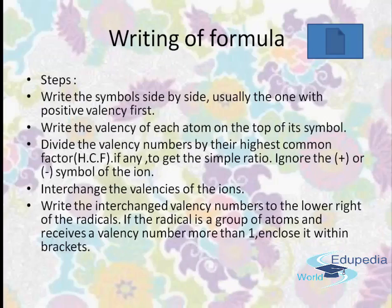The steps to write a formula are: first, write the symbols side by side, with the one with positive valency first. Second, write the valency of each atom on the top of its symbol. Third, divide the valency numbers by the highest common factor if any, to get the symbol ratio — ignore the positive or negative symbol of the ion. Then interchange the valencies of the ions and rewrite them as subscripts to the lower right of the symbols. If the radical is a group of atoms and receives a valency number more than one, enclose it within braces.